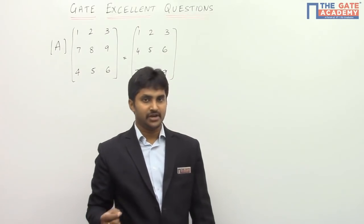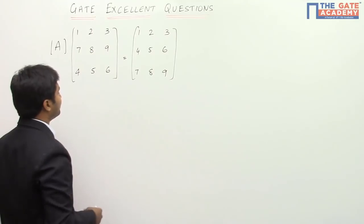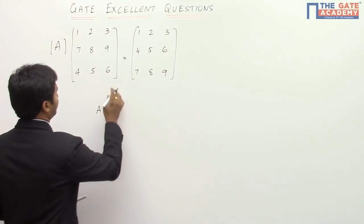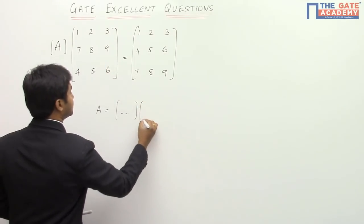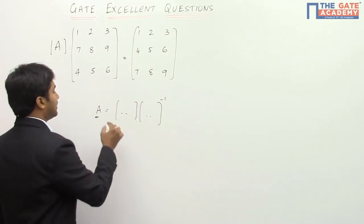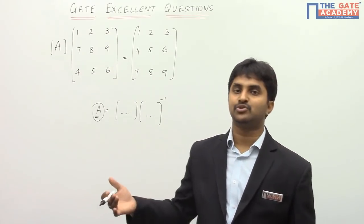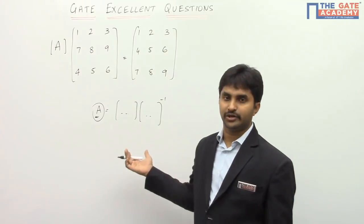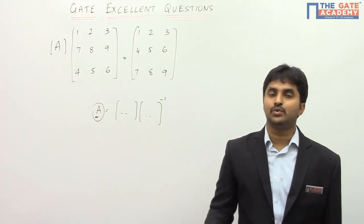This question does not have a straightforward method to solve. If you want a straightforward method, you would take A equal to one side, take the inverse of the other matrix, and from matrix A find the eigenvalues — that would be the conventional approach. But this is going to take a huge amount of time, and it is also not the correct method because this matrix is going to be a singular matrix, and when you have a singular matrix you cannot find an inverse.